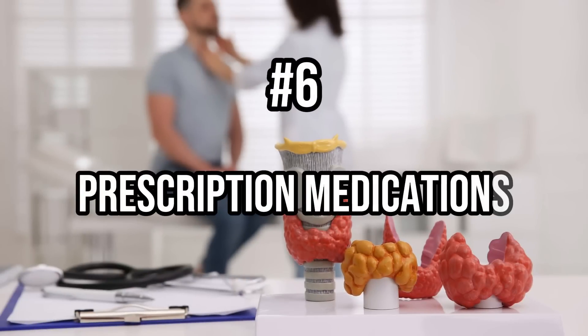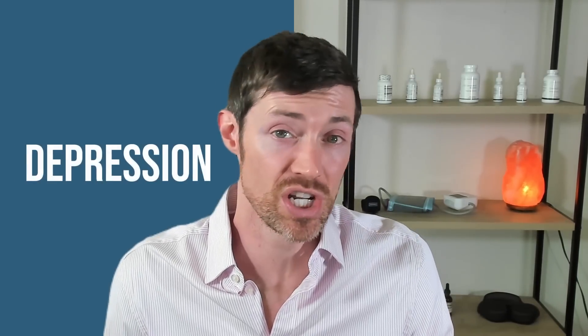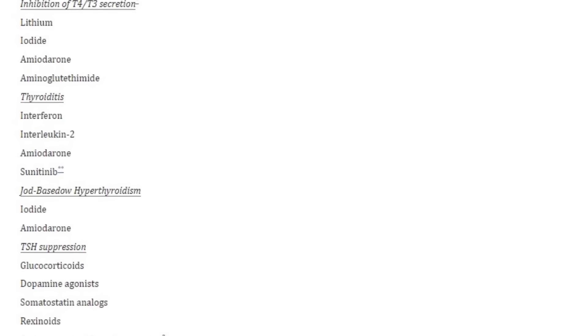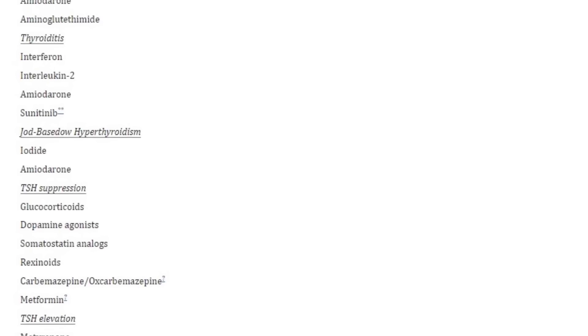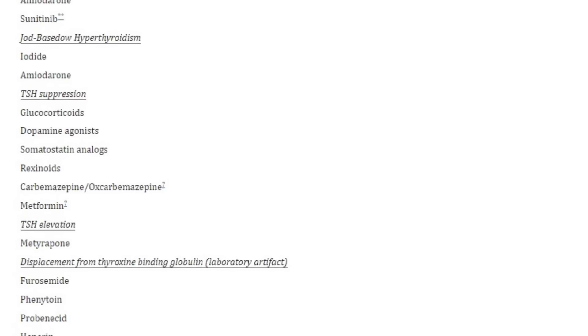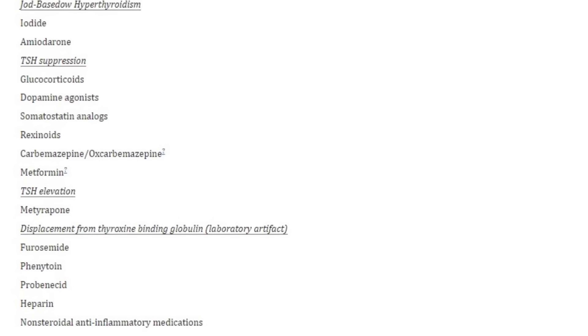Number six on the list are prescription medications. There are many medications that can interfere with your thyroid, some prescribed for very common conditions like depression or high blood sugar. Drugs that interfere with T4 and T3 levels directly include antidepressants such as SSRIs, lithium, iodide, amiodarone, pain medications and narcotics, and beta blockers. Drugs that interfere with TSH levels include metformin, steroids, and dopamine agonists. Drugs that impact thyroid hormone binding and transport include estrogens, contraceptives and HRT, steroids, and non-steroidal anti-inflammatory medications like ibuprofen and aspirin.